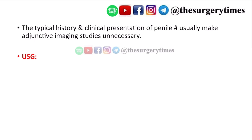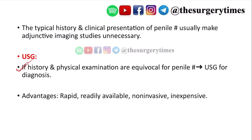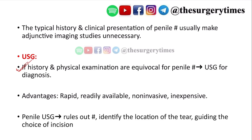Typical history and clinical presentation usually make imaging unnecessary. However, when history or physical examination is equivocal, imaging can be used. Ultrasonography is the first choice — it is rapidly done, readily available, non-invasive, and inexpensive. Penile ultrasonography can rule out fracture and identify the location of the tear, allowing the surgeon to plan the incision directly over the fracture site.